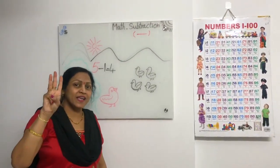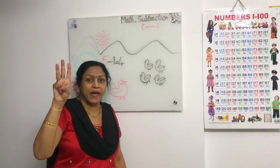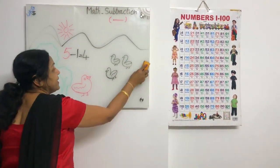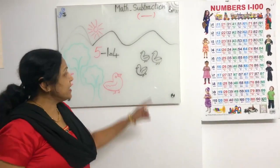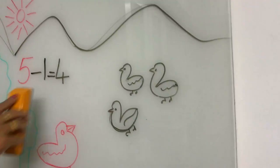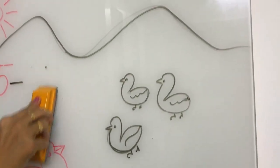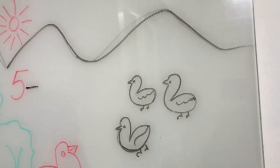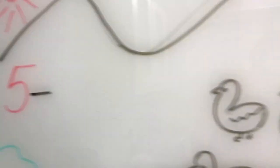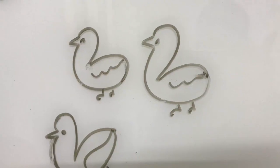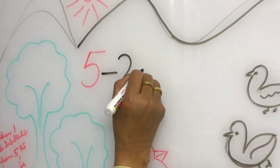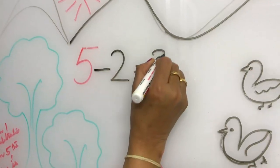Mother duck said quack, quack, quack. Three little ducks came back. So how many little ducks came back? Three little ducks came back — one, two, three. So when two is subtracted from five, the answer is three.